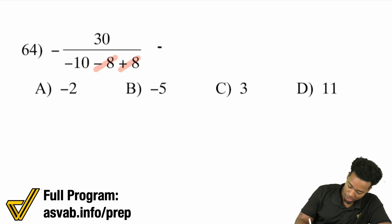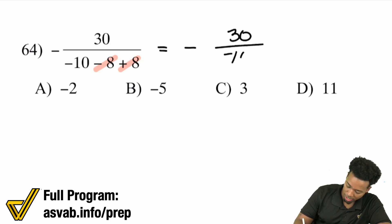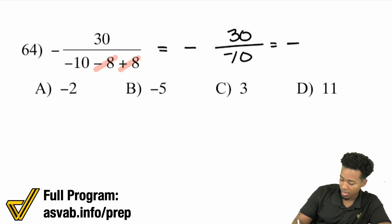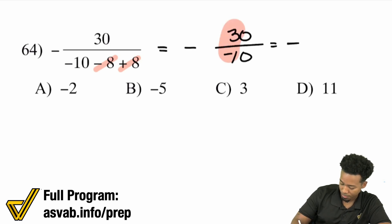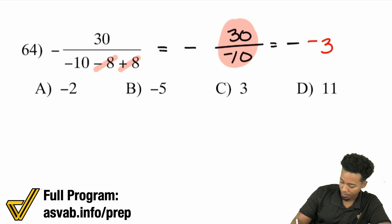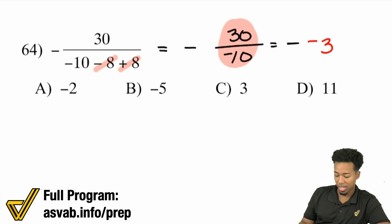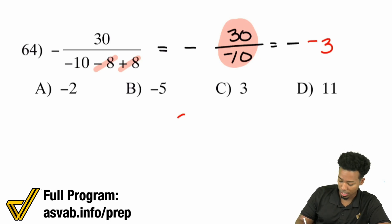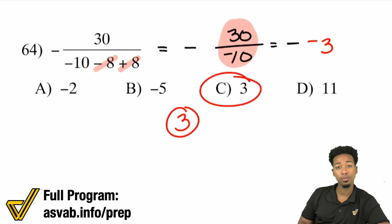So essentially what we have is the negative in front and 30 divided by negative 10. 30 divided by negative 10 — that's going to be negative 3. So we have negative, negative 3. Negative negative 3 is a positive 3, and that's why C is the answer.